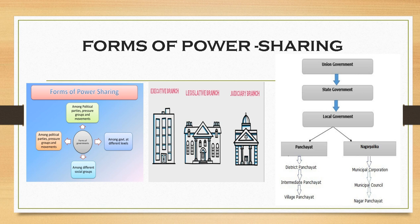Then you have linguistic groups. These groups come together for the development and promotion of a particular language. If you remember the example of the community government in Belgium, that was the example of linguistic groups giving importance to language. The people of Belgium had Dutch and French; in Sri Lanka, you had Sinhala and Tamil. So it was a language issue between majority and minority.